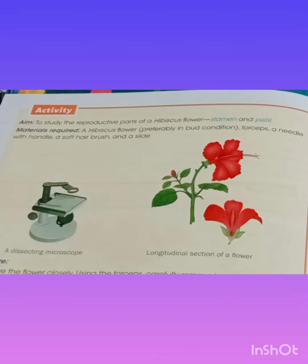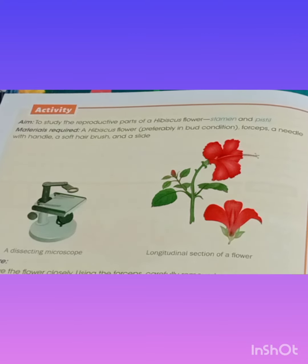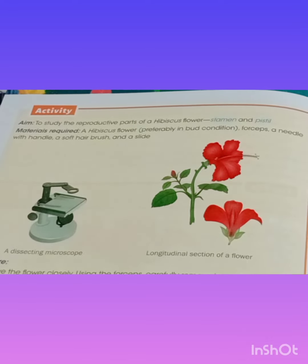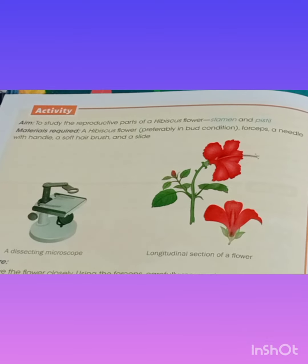The seventh question is: how are pollens found? Pollen grains are found in the male part of a flower, which is called the anther. The eighth question is: why is the stigma sticky in nature? The stigma is the topmost part of the pistil and is sticky in nature to catch the pollen grains.